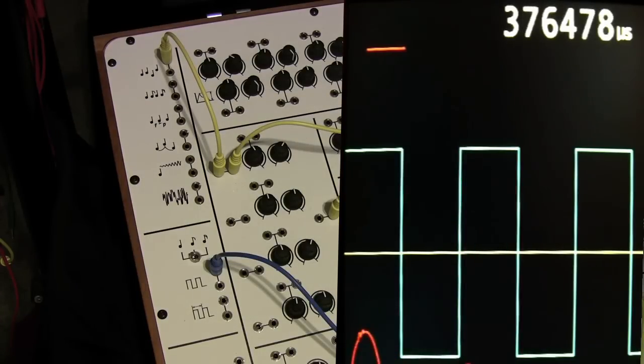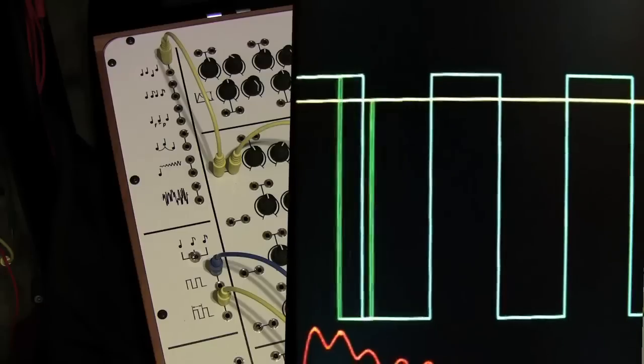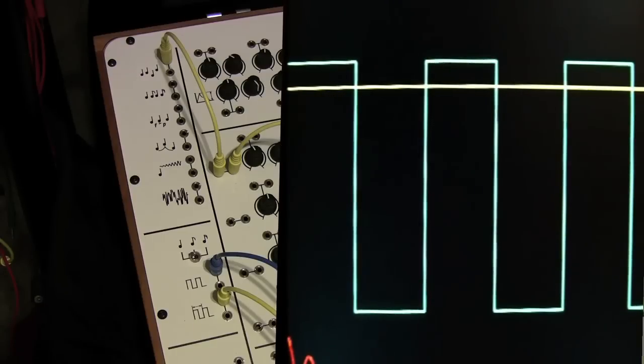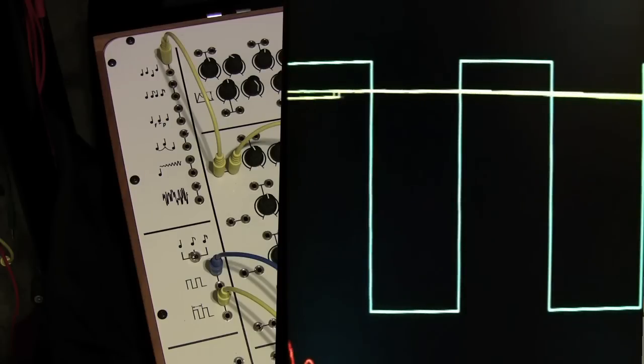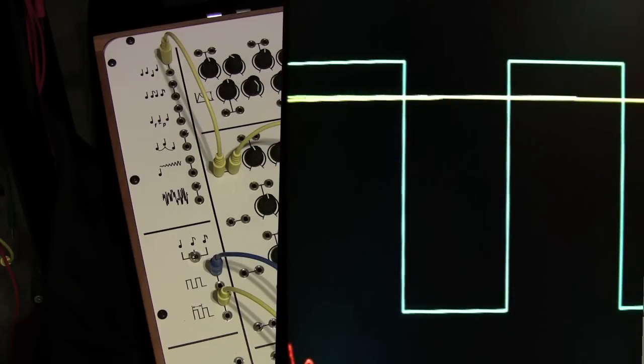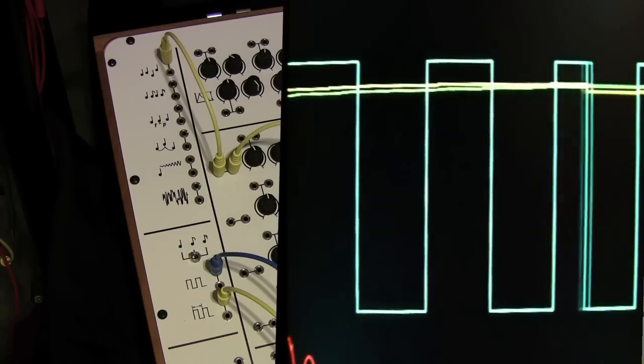Complementary to the gate of the clock is the rate of the clock. This is a signal which tells us whether the clock is running fast or slow. As we reduce the tempo we see this signal go down and as we increase the tempo we see this come up.